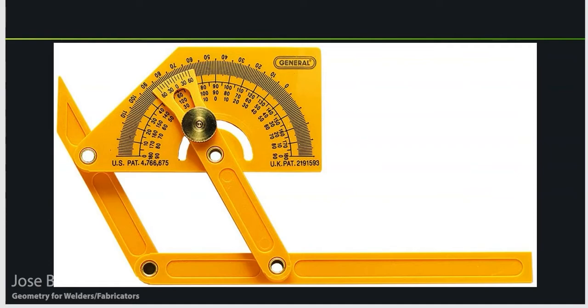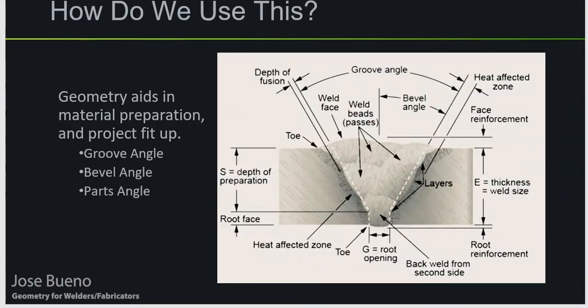One reason why we need to know this is because whenever we're beveling plate, we need to know that we put the correct angle of bevel on the plates, which is going to accumulate into what we call the groove angle. Not only that, but if you're welding a simple T-joint and you put both pieces of plate in their configuration, most often your T-joint is going to form a 90-degree angle on both sides. This is how we check for squareness — one of the first subjects we talked about.